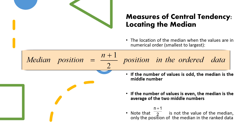To locate the median we can use the simple formula: (n + 1) / 2. Remember, this does not give you the value of the median — it only gives you the position. For example, if you get an answer of 6, that means the sixth position in the ordered data is the median. Here n is the number of values.